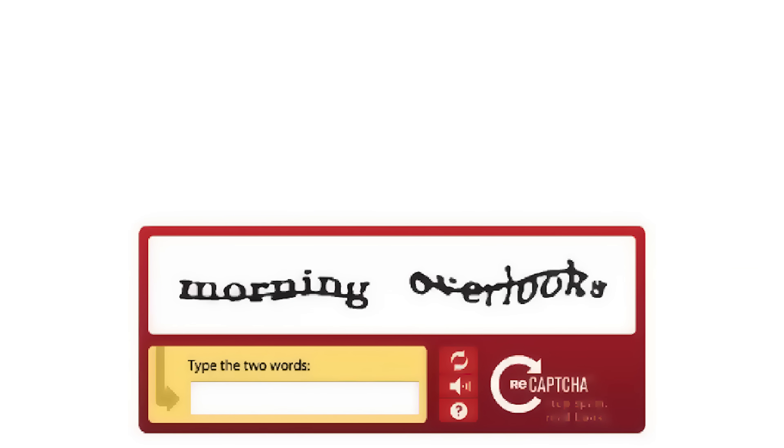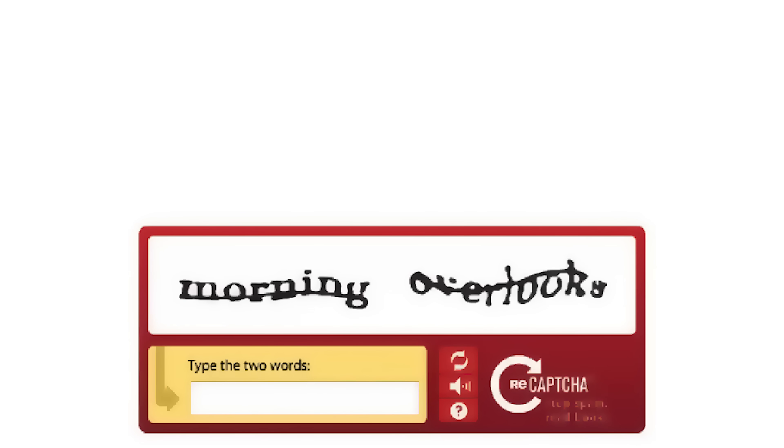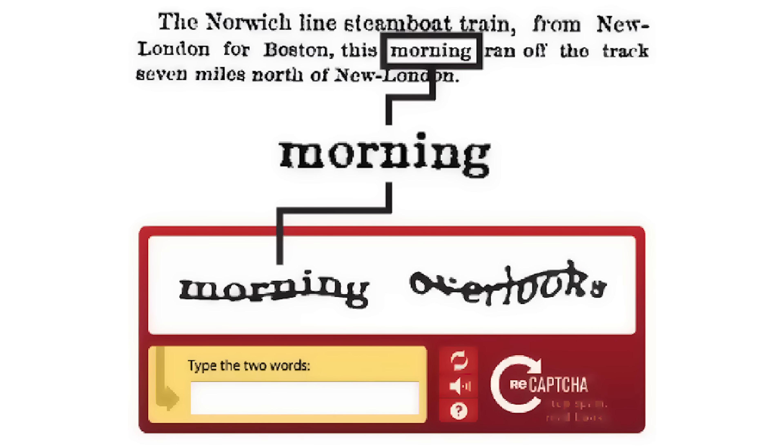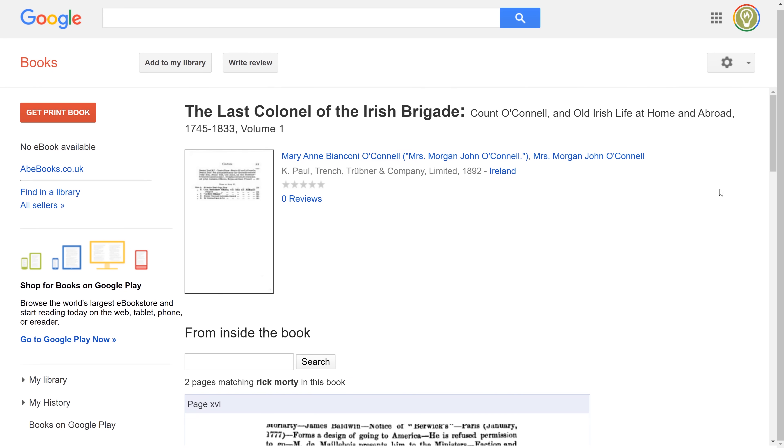Human brains are better than computers at certain tasks — maybe not forever, but it's true for now — which is why we use human brains to train artificial intelligence in things like computer vision. When you log onto a website and fill in a CAPTCHA, in the old days that used to be two garbled words you had to type out. Only one of those words was to test whether you're human. The other word was something Google was struggling with as part of their book digitization project — outsourcing it to humans through the CAPTCHA process, which also trained the AI to recognize that kind of word in the future.